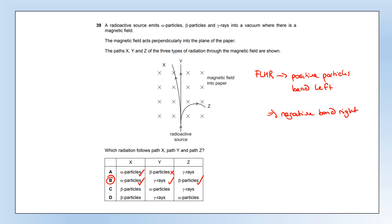A radioactive source emits alpha particles, beta particles, and gamma rays into a vacuum with a magnetic field perpendicular to the plane of paper (into the page). Using Fleming's left-hand rule: first finger into the page, middle finger toward Y — positive particles bend left, negative particles bend right. Alpha particles are positive so they bend left (path X); beta particles are negative so they bend right (path Z); gamma is uncharged so it continues straight (path Y). The answer is option B.